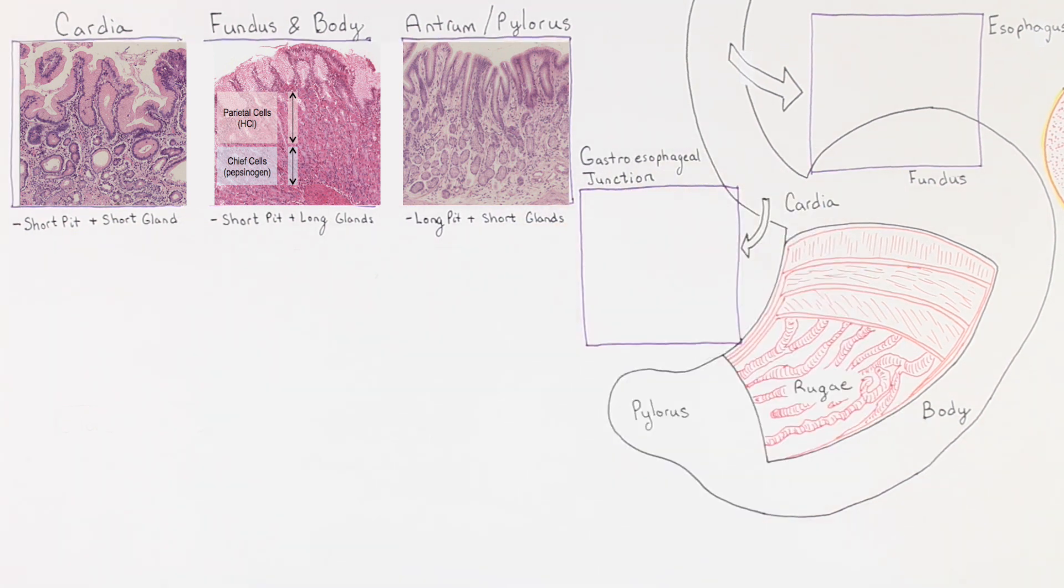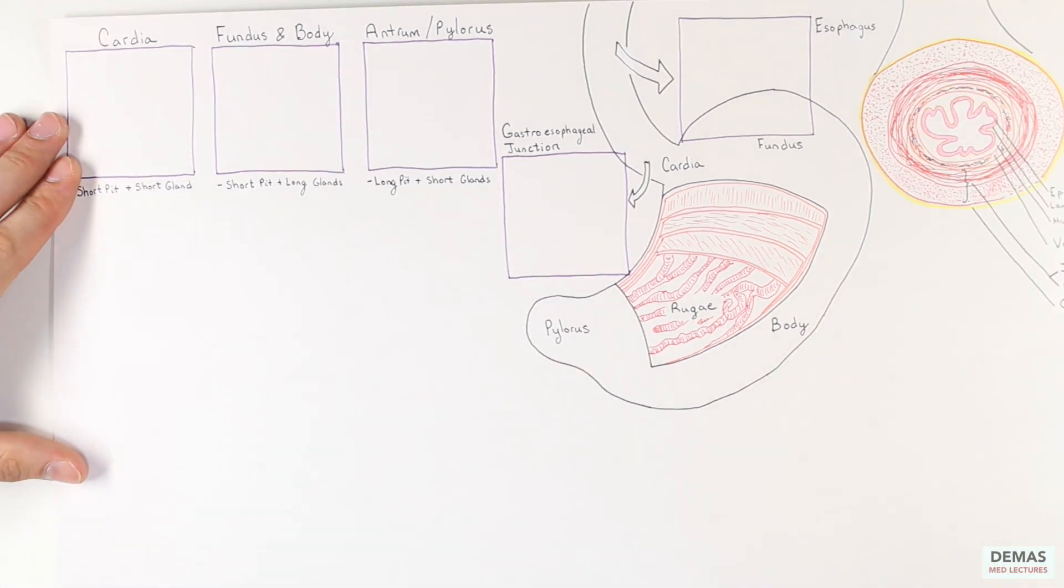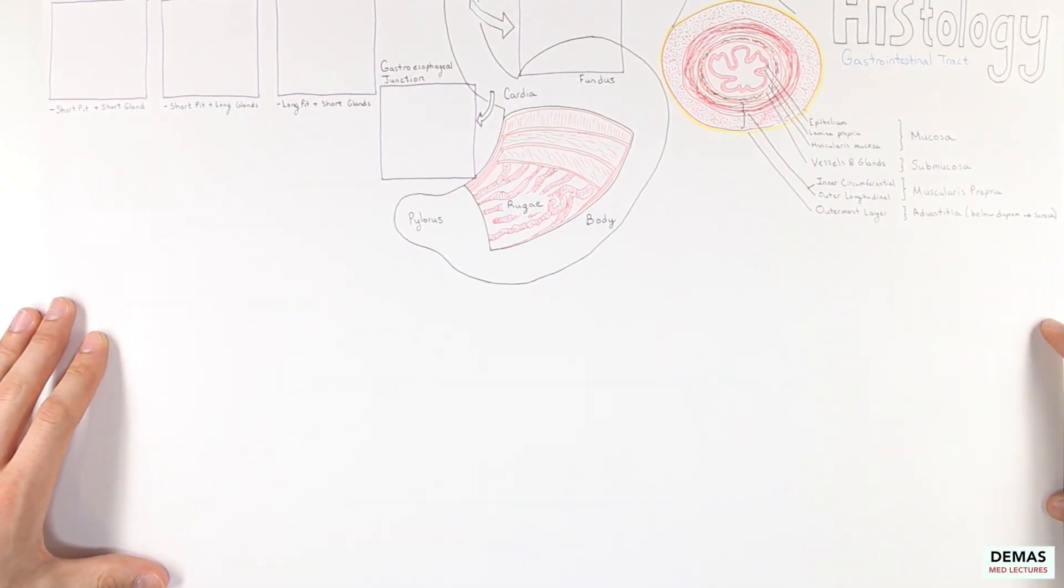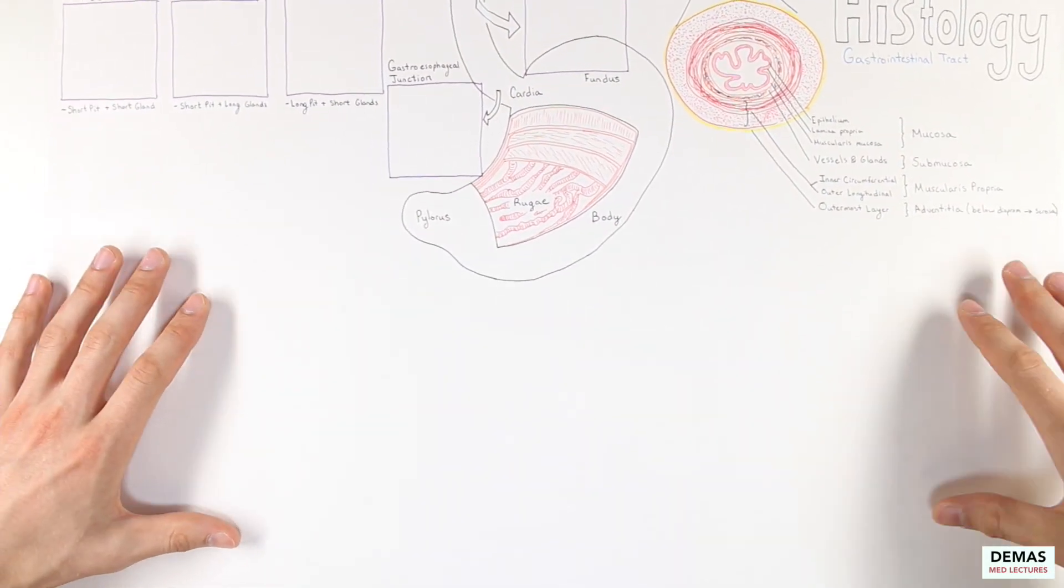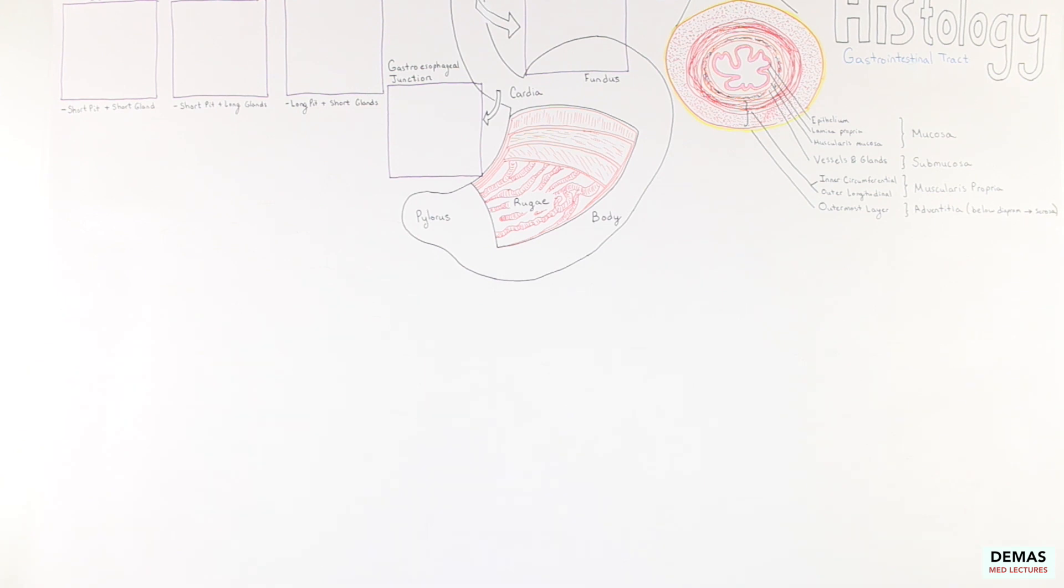Overall, this length ratio is going to be an important way for you to distinguish between the different parts of the stomach and something you should be familiar with. Now I think is a good time to take a short break. We will continue with the second part of the digestive tract lecture in the next video.